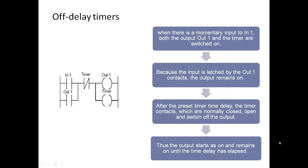Off-delay timers. When momentarily input 1 and output 1 or timers are switched on, the input 1 is lost as output 1 contacts, the output remains on. After the preset timer delay, the timer contacts which are normally closed open and switch off the output. Thus the output starts on and remains on until the time delay has elapsed.